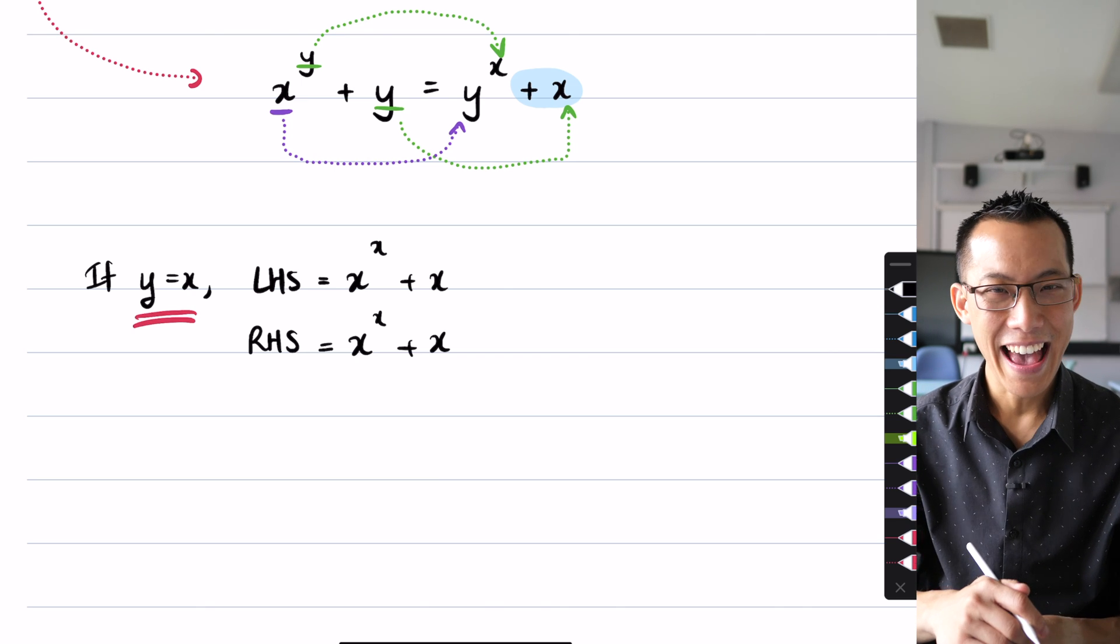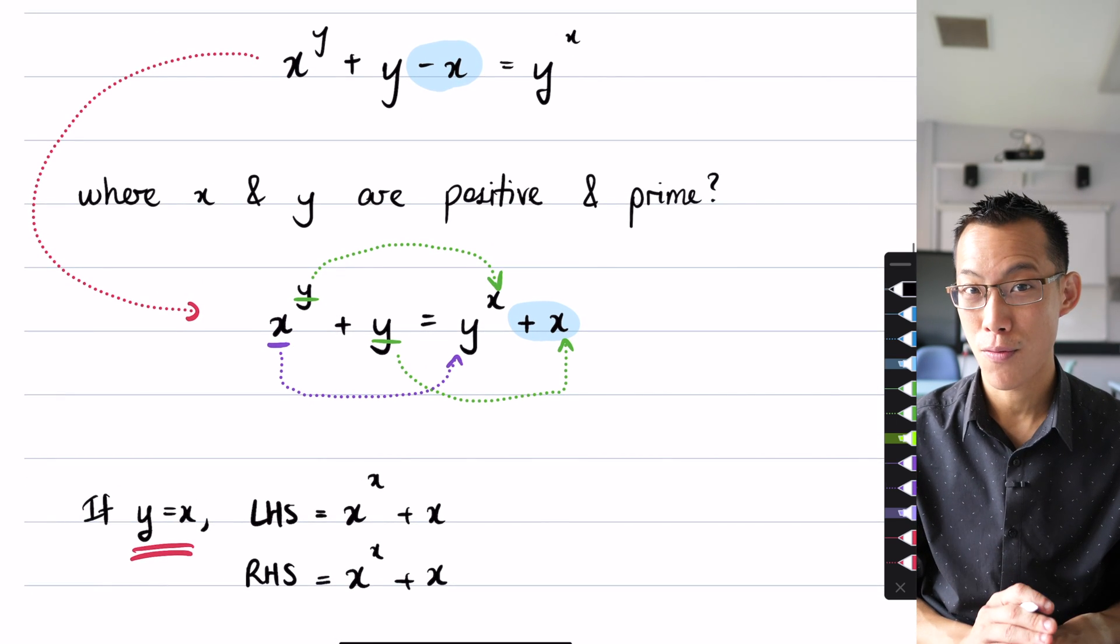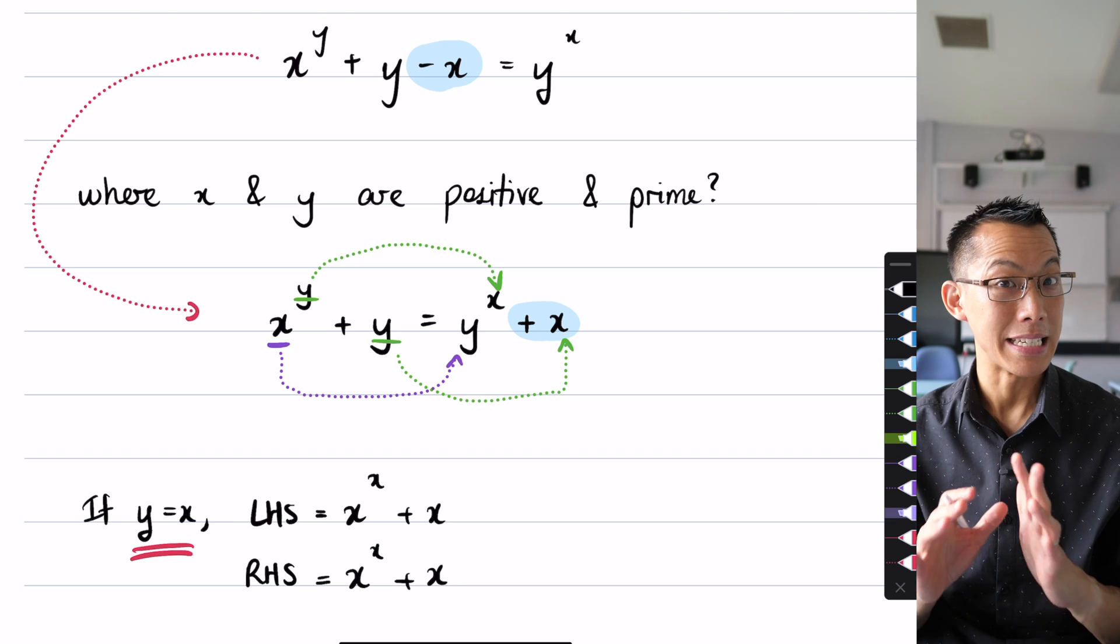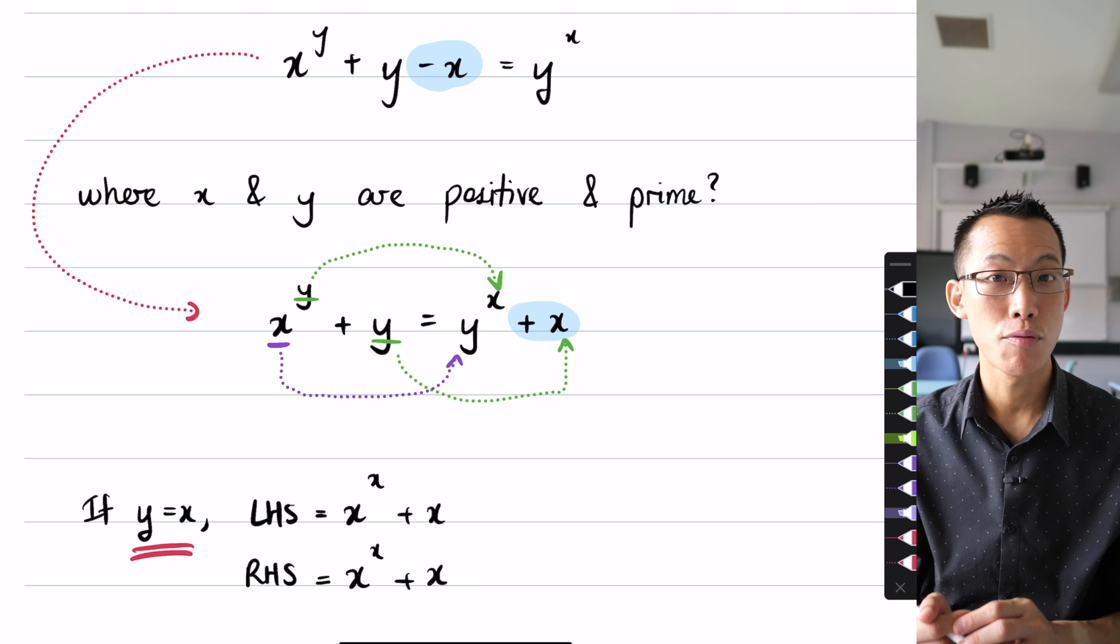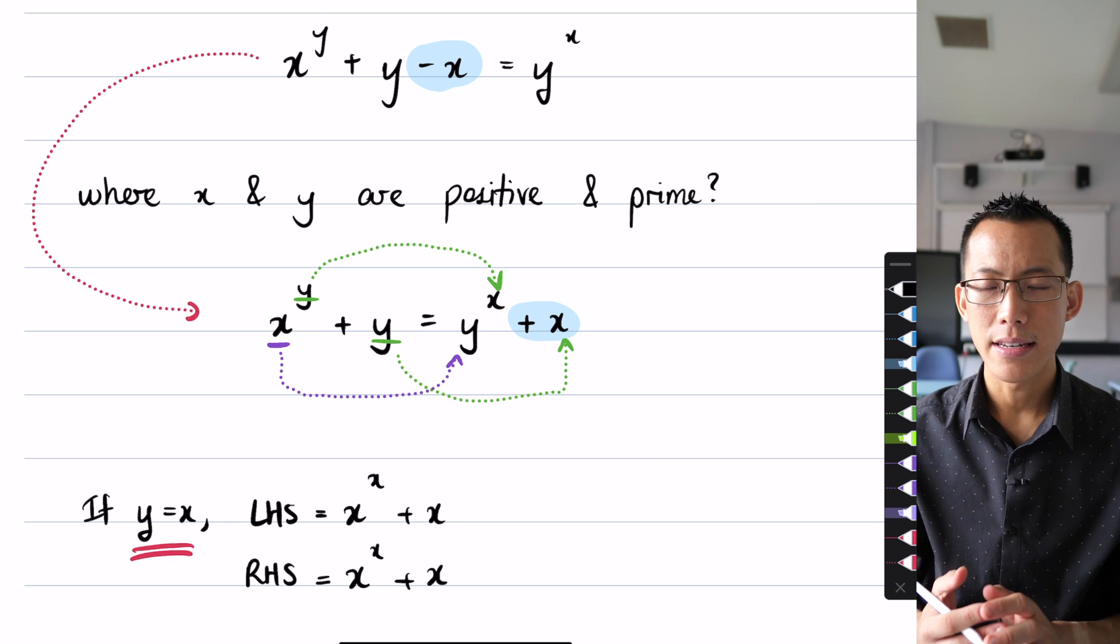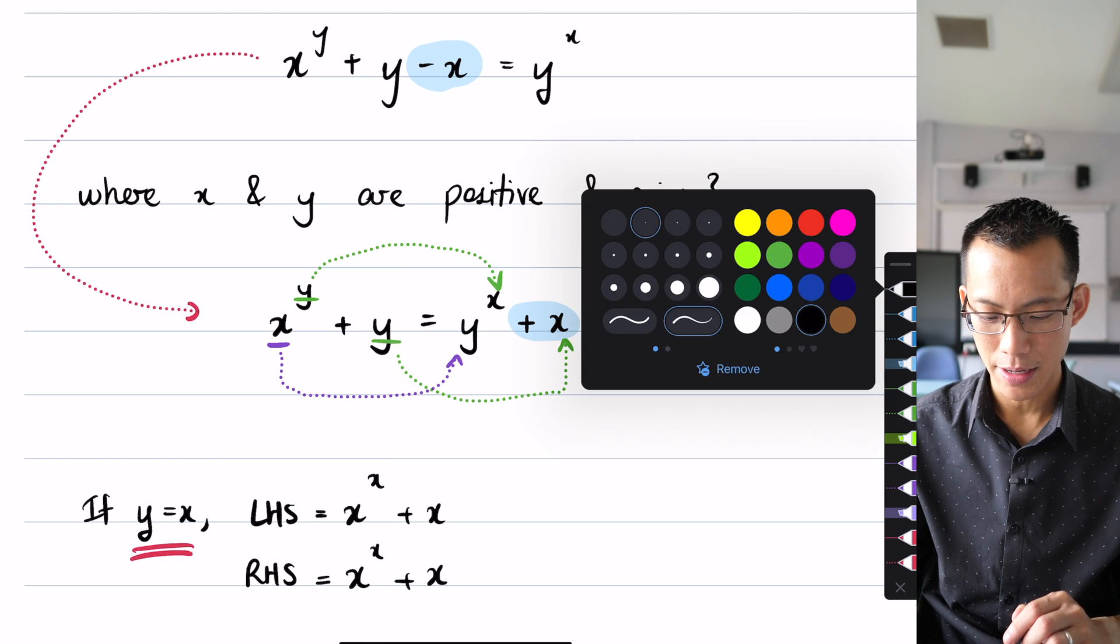Now x and y are positive and prime. If I'm saying they have to be different, the first two prime numbers are two and three. Interestingly, if we say, because of the symmetry it doesn't matter if x is two and y is three or the other way around.